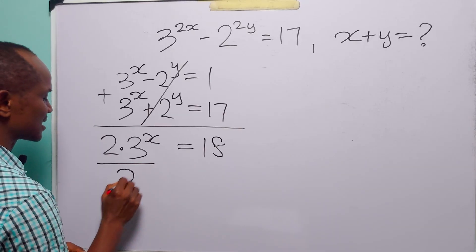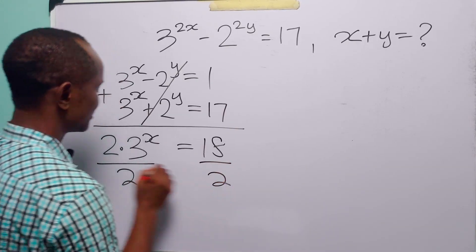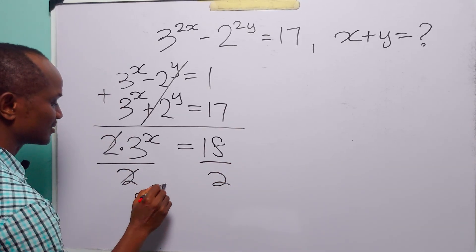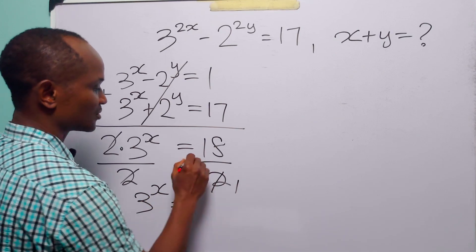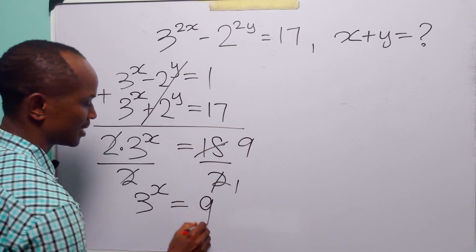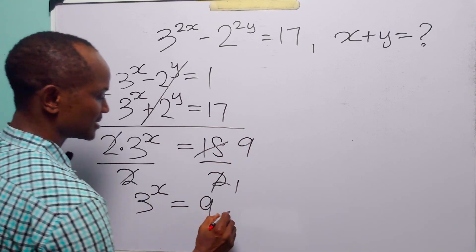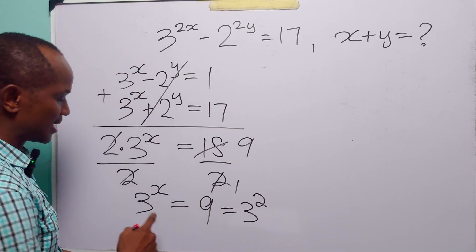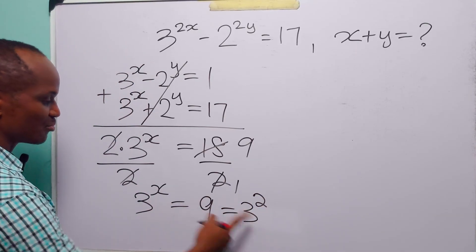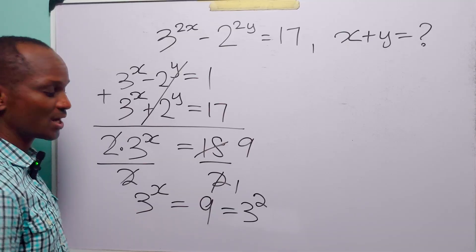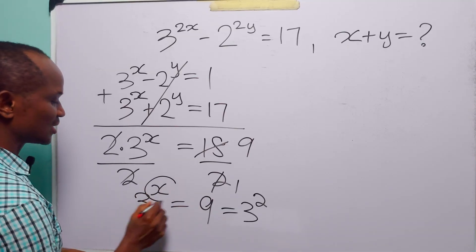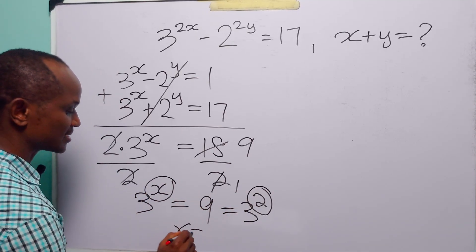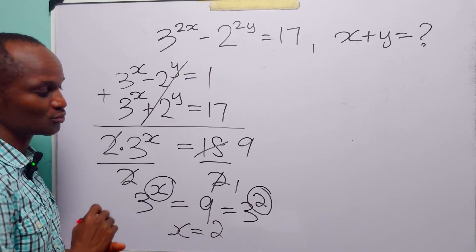Now let us divide both sides by 2. We get 3 to the power x equals 9. Since 9 equals 3 squared, we now have the same base on both sides of the equation. Equating the exponents, we find that x equals 2.